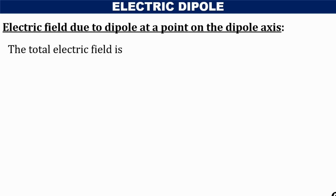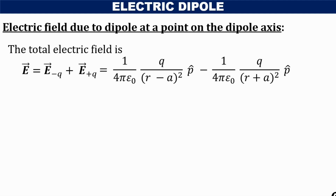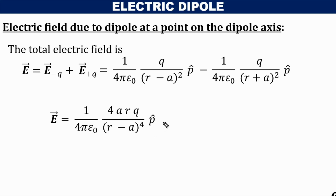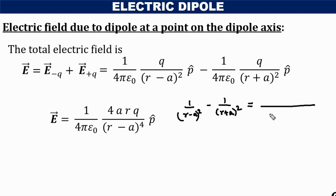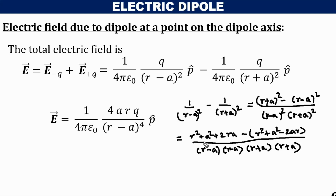Applying the principle of superposition, the total electric field equals the vector sum of E minus Q and E plus Q, which gives 1 by 4π epsilon naught times Q times [1/(R minus a)² minus 1/(R plus a)²]. Expanding the numerator: (R plus a)² minus (R minus a)² equals 4aR. The denominator becomes (R minus a)² times (R plus a)², which equals (R² minus a²)².